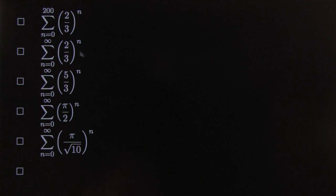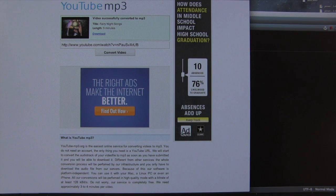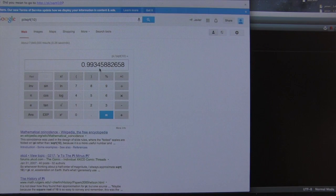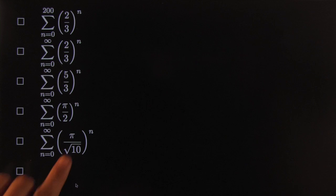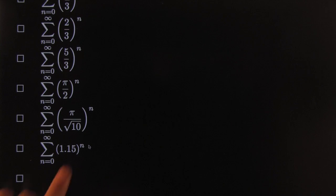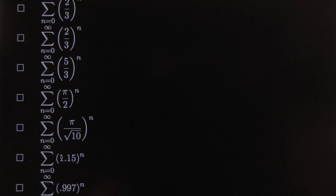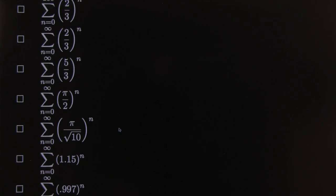Let's check: pi divided by the square root of ten. Google says it's 0.9999 — so that series converges! And so on: 1.15 is obviously larger than one, so that diverges; 0.997 converges because it's smaller than one. The pattern is always the same.